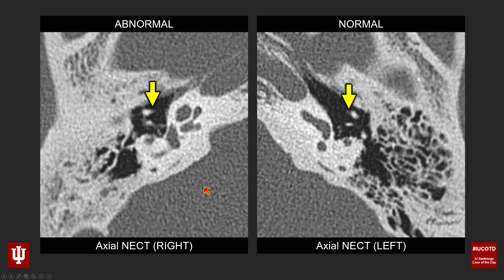Looking at the malleus — the long process and neck — at the attachment site of the tensor tympani tendon, you can see just how thickened the bone is, and look how thick the tendon itself is compared to the contralateral side. You can always see this tendon, but it's nice and thin on the normal left side. To summarize the findings: an under-pneumatized and sclerotic right mastoid, increased density and thickening along the ossicular chain with a studded, calcific appearance, and thickening and increased density of the tensor tympani tendon.